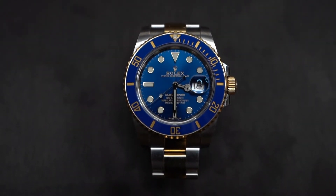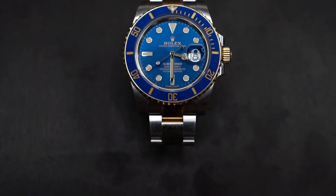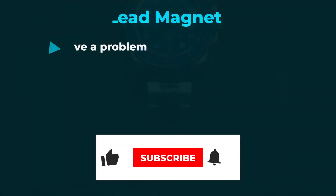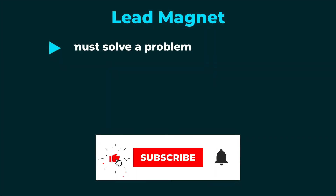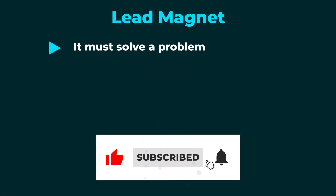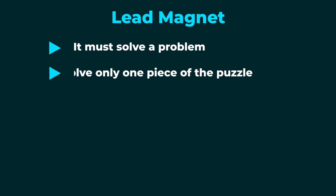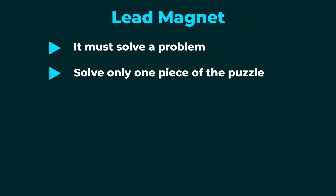Here are the six tips for a high quality lead magnet that is irresistible. First, it must solve a problem — you have to ask yourself what does the freebie solve. Second, it has to solve only one piece of the puzzle. You don't want to give away everything you know for free. Give them a solution to one problem at a time.